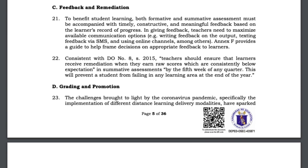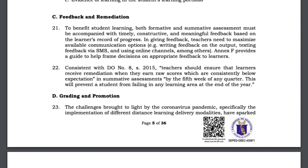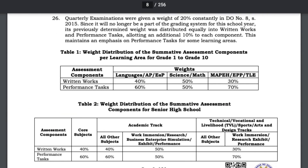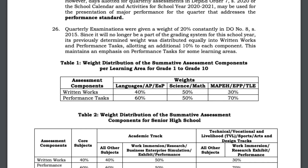Part C, Item No. 22, reminds us that the results of summative assessments must be tracked and learners who are falling behind by the fifth week of the quarter must be given remediation. Now let's get to the weight distribution of summative assessment components per learning area for grades 1 to 10. Language learning areas such as English, Filipino, and mother tongue-based instruction will have 40% written works and 60% performance tasks. Science and mathematics will have 50% for both. MAPE along with EPP or TLE will have 30% written works and 70% performance tasks since most of its components are measured on actual performance. Most provisions under DepEd Order No. 8 Series of 2015 are still in effect.